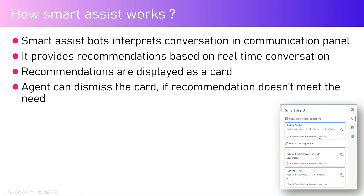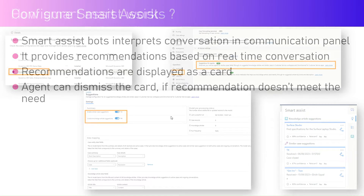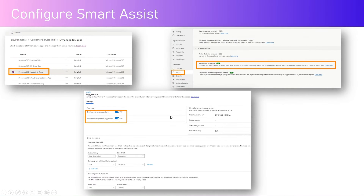If you click 'Yes', the engine understands that whatever was done in the backend is correct and will try to improve the algorithm. An agent can dismiss the card if the recommendation doesn't fit by clicking 'No'. This is how smart assist works within your organization. Now let's look at how to configure smart assist.